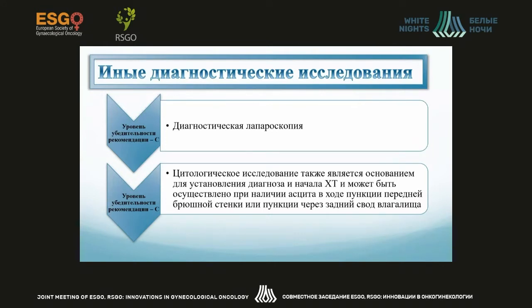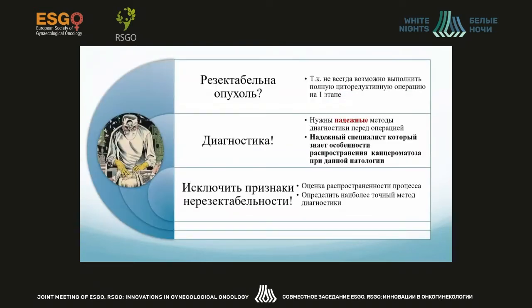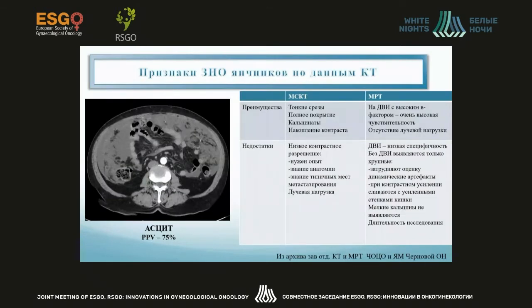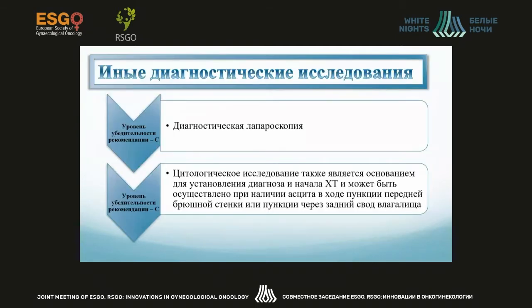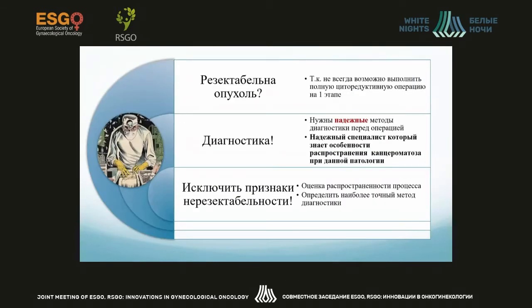There are other diagnostic methods: diagnostic laparoscopy, and it is also possible to use cytological examination to establish the diagnosis from fluid in the abdomen and pleural cavities. When a surgeon plans treatment for disseminated ovarian cancer, first we ask whether the cancer is resectable and if debulking is possible. Debulking is not always possible — sometimes the tumor is too widely disseminated.